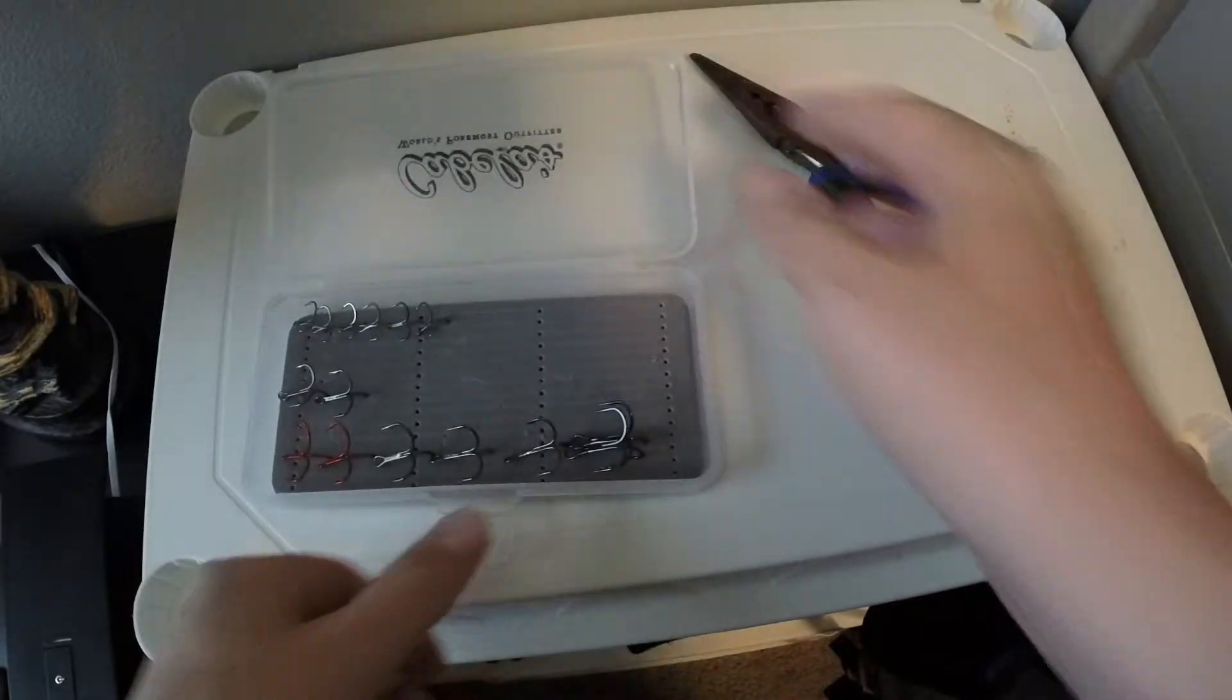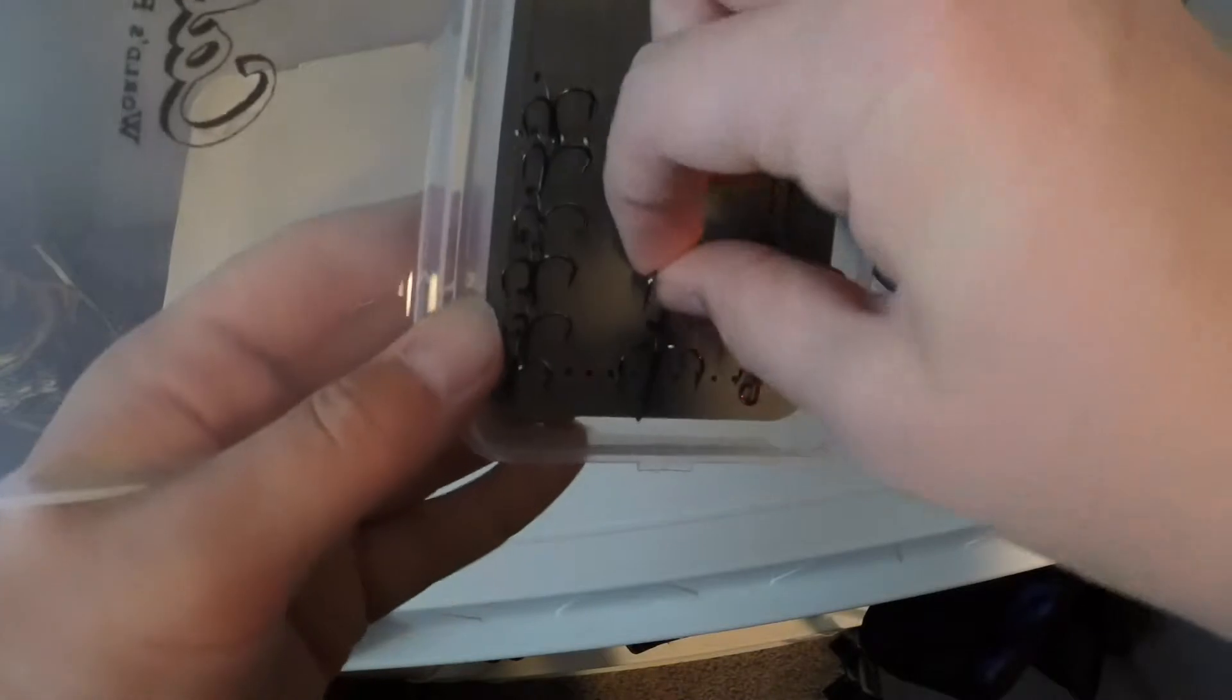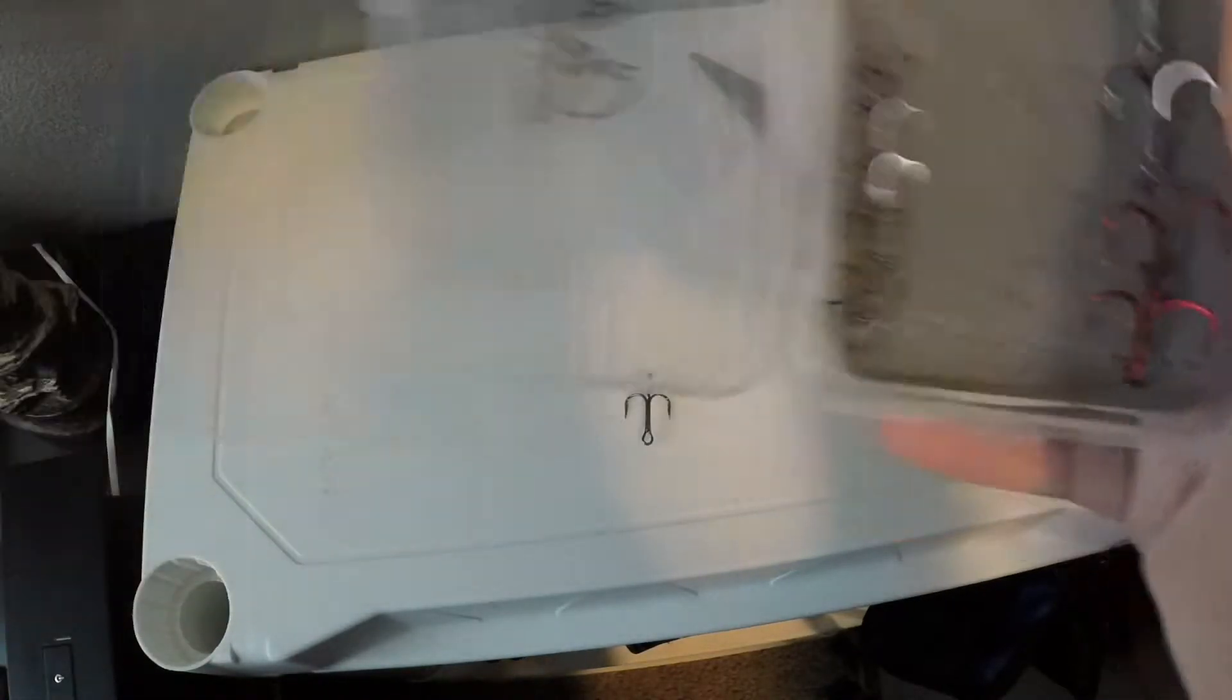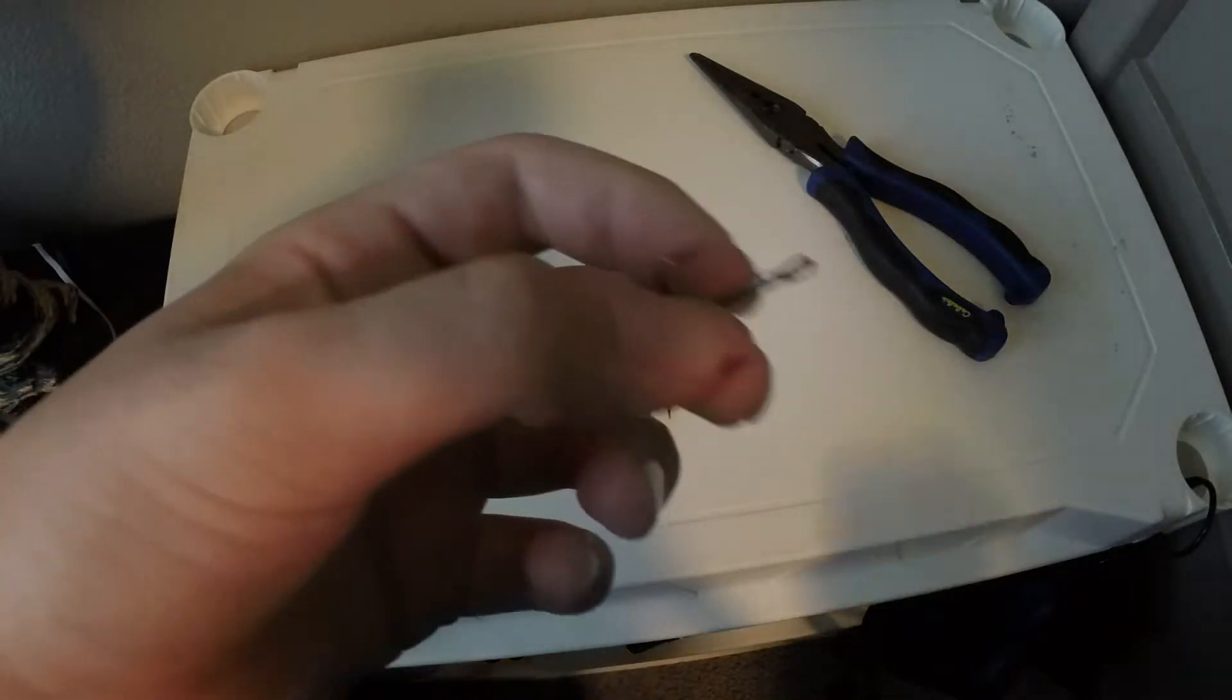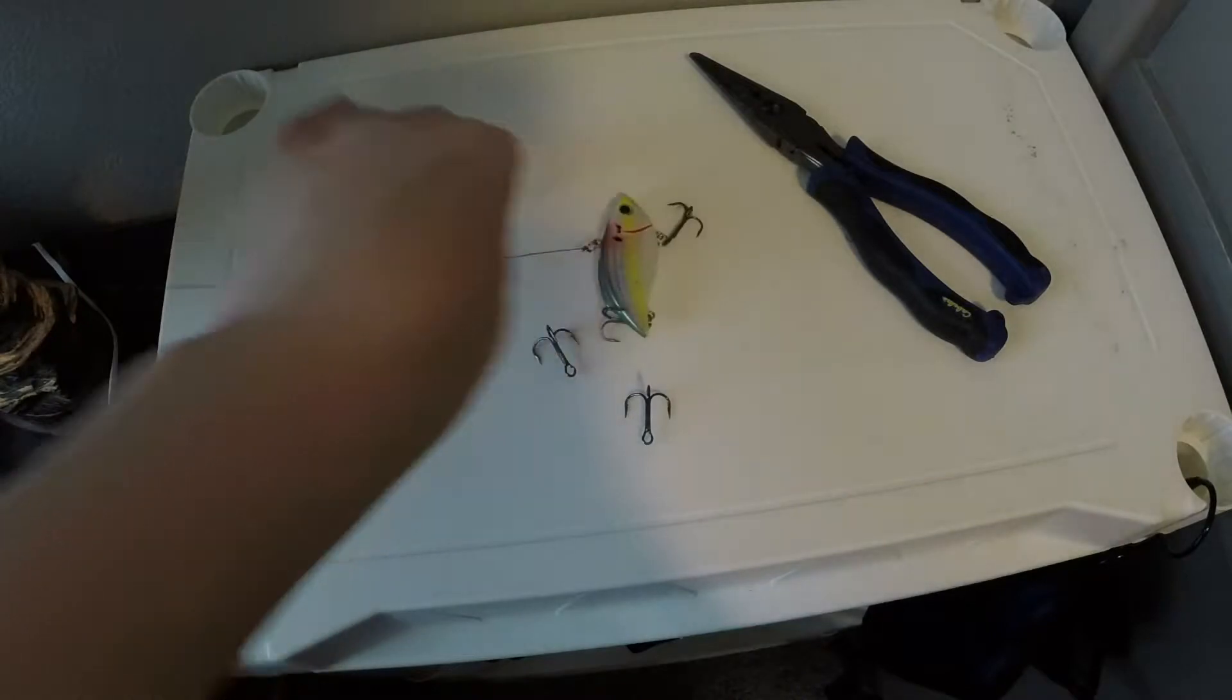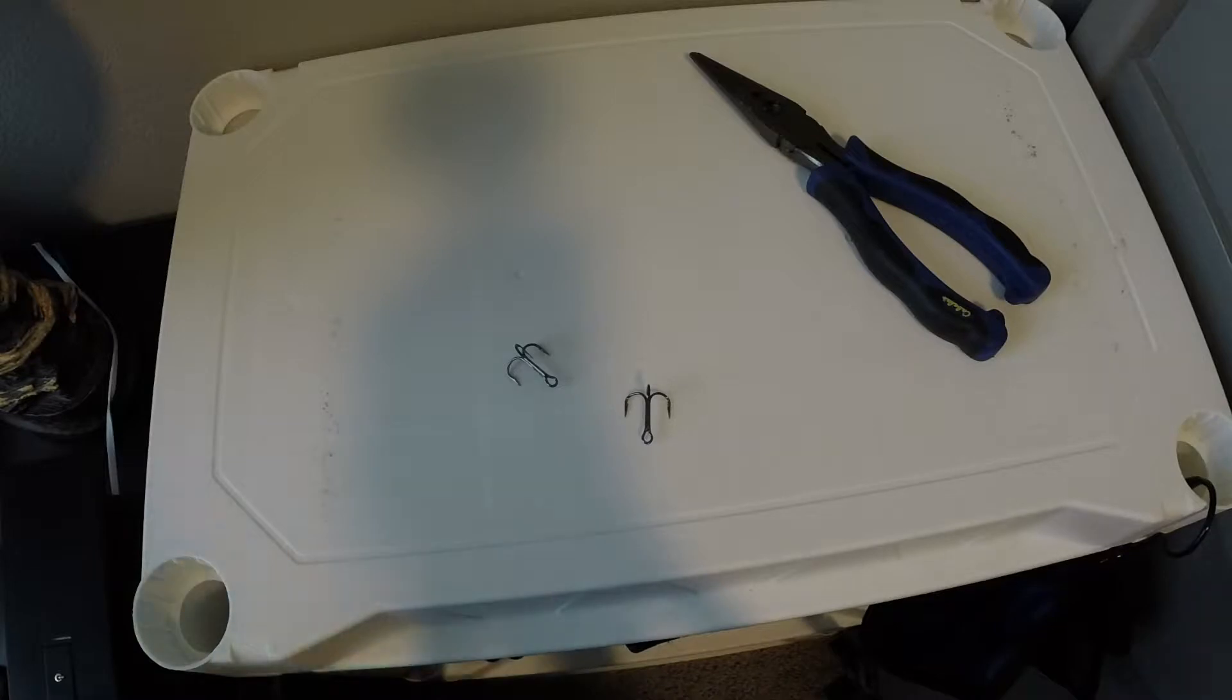Okay guys, so here is my stuff. These are the two treble hooks right here that I'm going to use. Let's see if I can get them off. There's one and there's two. I do not know the size of these treble hooks, they're just kind of like medium treble hooks I guess. Here's my bait.